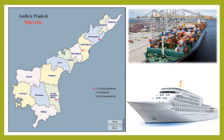We also have three main shipyards. The first one is Visakhapatnam — it is a natural shipyard located in Visakhapatnam district. The second one is Kakinada in East Godavari district, and the third is Krishnapatnam in S.P.S. Nellore district.